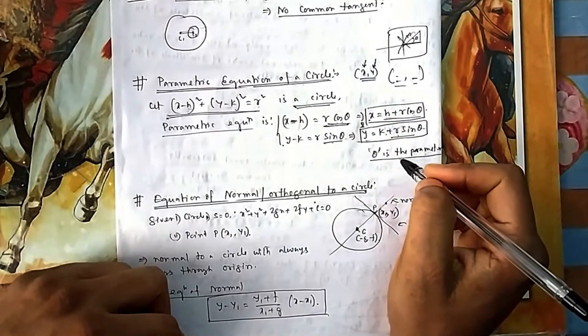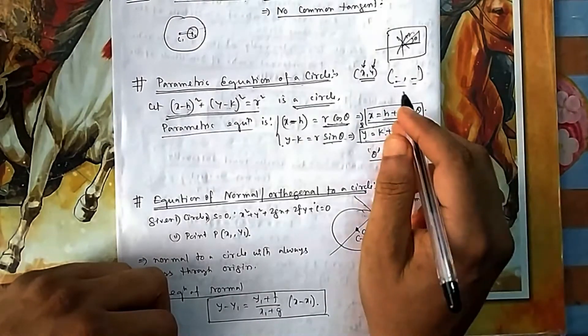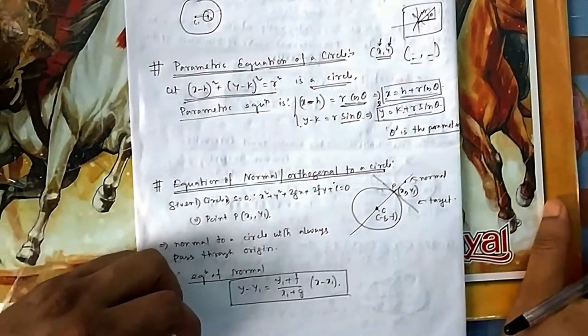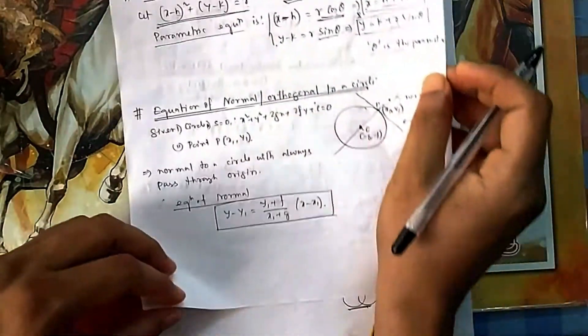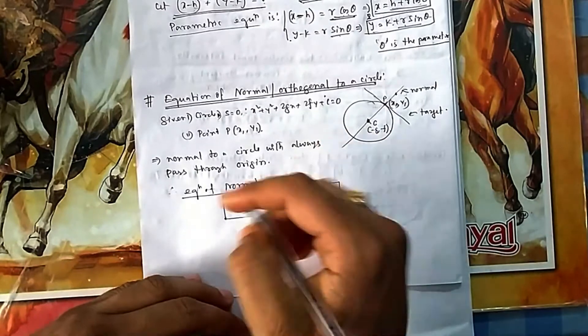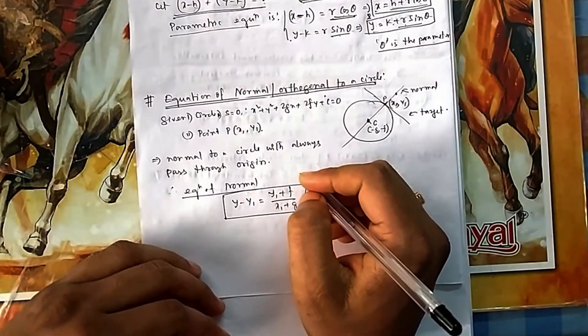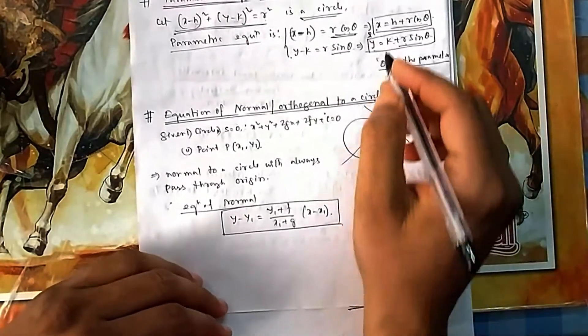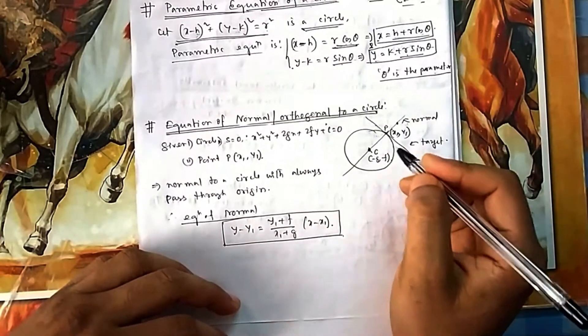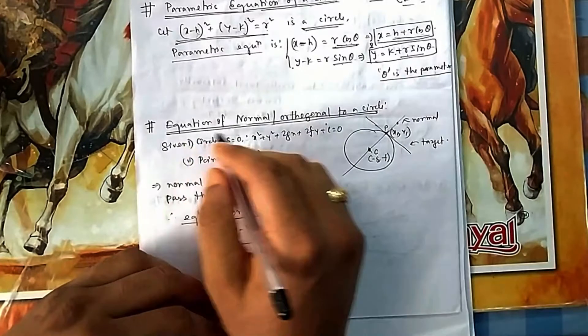That is the importance of parametric: you will need less equations and you can solve it more speedily. The time taken for solving the equation will be very less because with one variable you will be dealing with only θ.